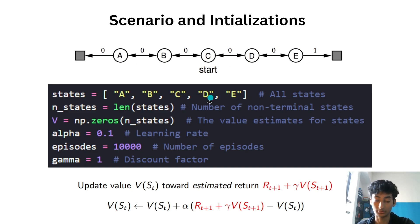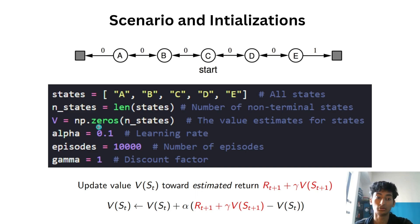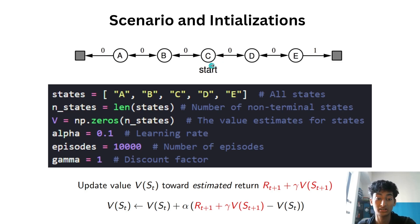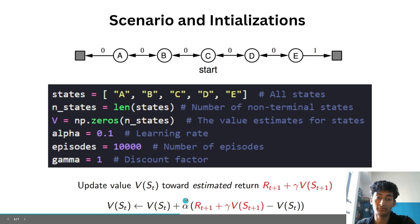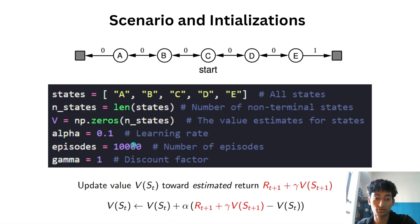In Python we represent all the states as A, B, C, D, E. The number of states is the length of that array — five. We have an array called capital V which stores the value estimates of all states, initialized to zero using np.zeros, giving a five-element array all set to zero. Alpha is the learning rate set to 0.1, and the number of episodes is how many times we want the agent to run — the episode ends when it reaches a terminal state.